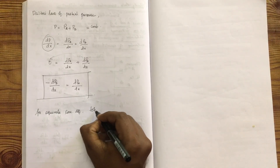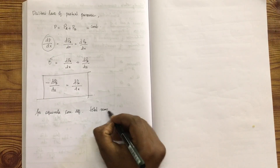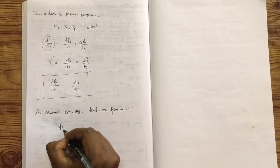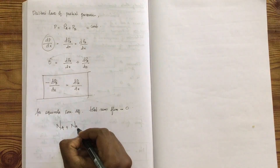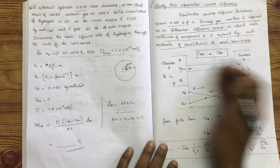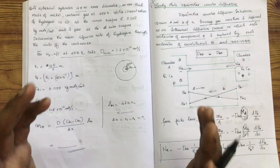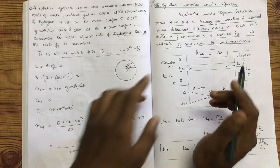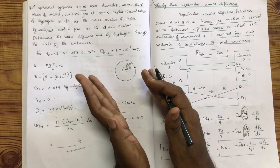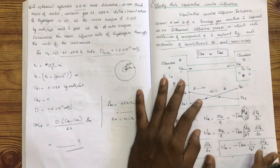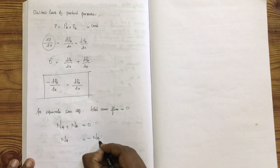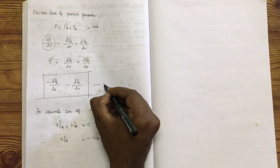For equimolar counter diffusion, the total mass flux is equal to zero. NA plus NB is equal to zero, which means NA is equal to minus NB. That is the first condition.